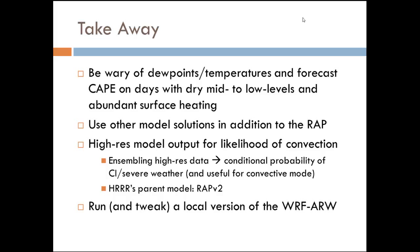It's also important to note that the HRRR's parent model is the RAP version 2, so it's taking advantage of those updates, and the HRRR has been performing really well. That's also another tool you can look at to figure out what's happening in the operational RAP. I always encourage you to run and tweak a local version of the WRF ARW because in different convective situations — maybe even nocturnal convection versus afternoon, squall lines versus supercells — there could be different parameterizations that work better for each situation. You can do local studies, figure out what works best for your neck of the woods, run it the way you want, and get your own output as another answer to compare to the operational models.